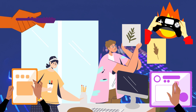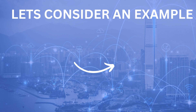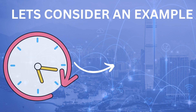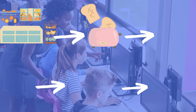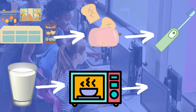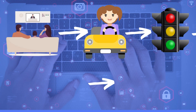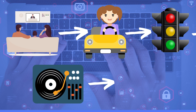We have surrounded ourselves with ICT devices and use them every day without even realizing how important they have become. Consider this example: when an alarm clock wakes you up, you head to the kitchen and plug in the toaster or coffee maker. After using your electric toothbrush, showering, and dressing, you put a glass of milk in the microwave, then pick up the TV remote to catch the latest news or weather forecast. Later you sit in your car to go to the office or school, stopping at a traffic light while listening to music or checking the GPS.